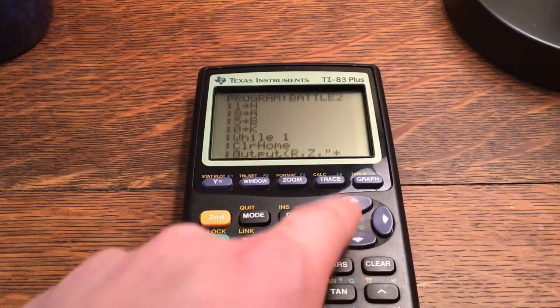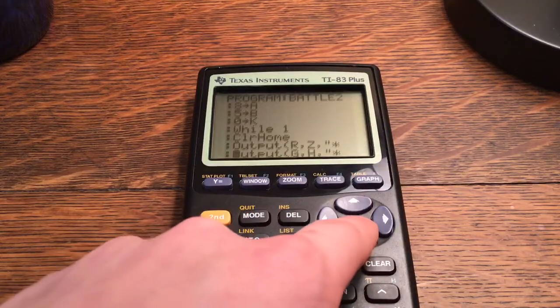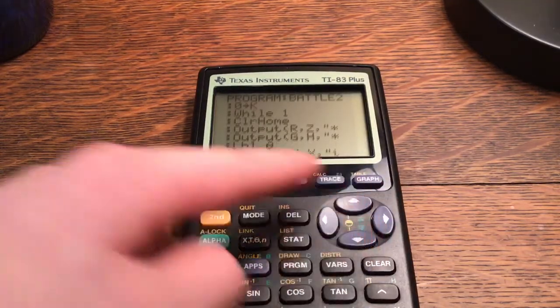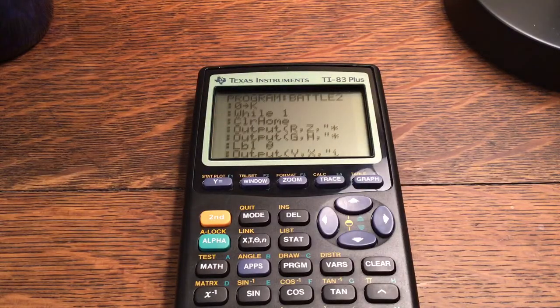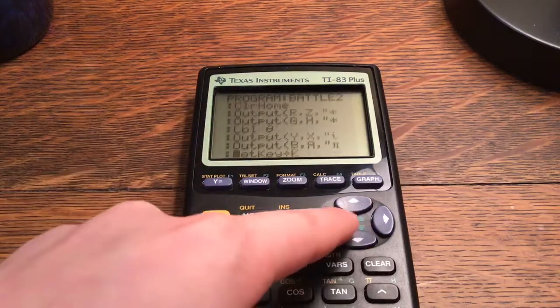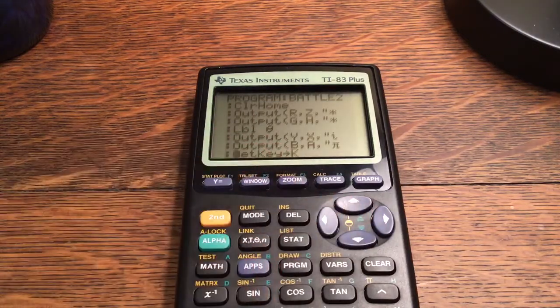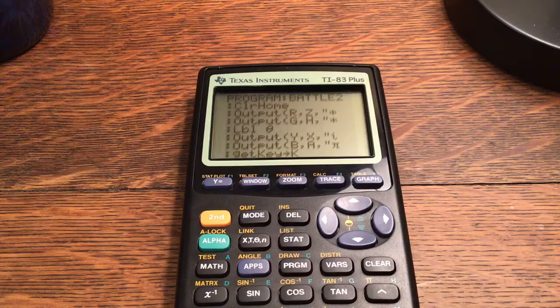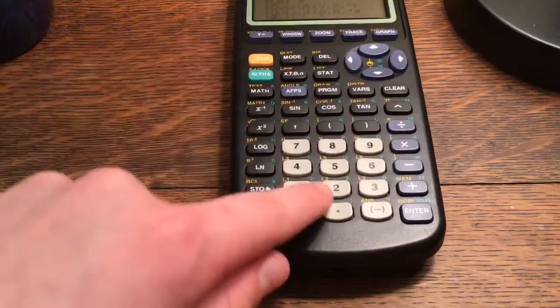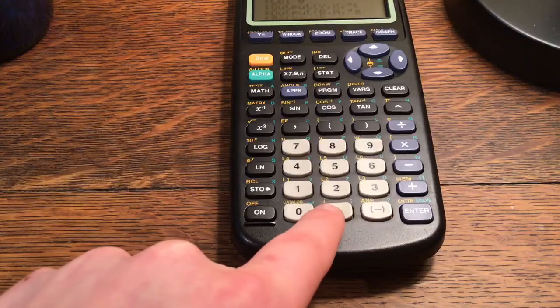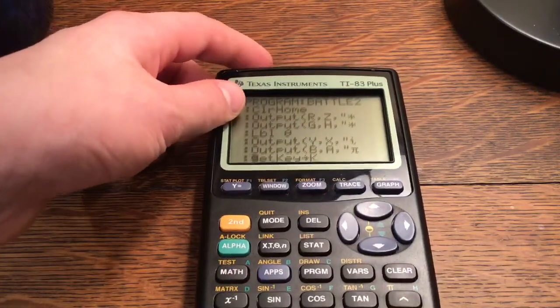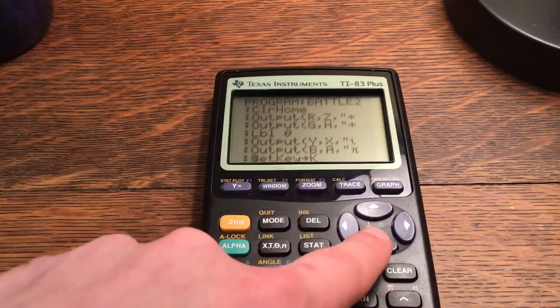Output R, Z, the mine. Output G, H, another mine. Label theta. So, it'll come back to this part later in the program. And then, it'll keep running it. Then, output Y, X, quote, the I for imaginary number. Second, and then the period right here has a little I. Then, output B, A, the little pi. And, get key stored into K.